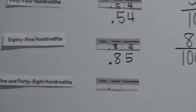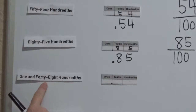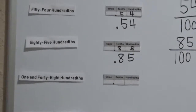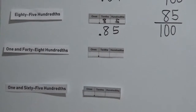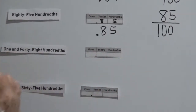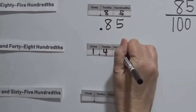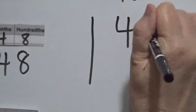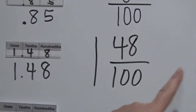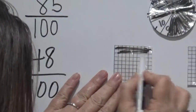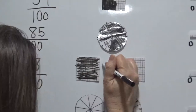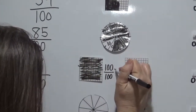Now let's try the next one: one and forty-eight hundredths. The word 'and' means it's the decimal point, and the one is one whole. So the decimal form is 1.48, and the fraction is one whole and forty-eight out of a hundred. A hundred out of a hundred is equivalent to one whole.